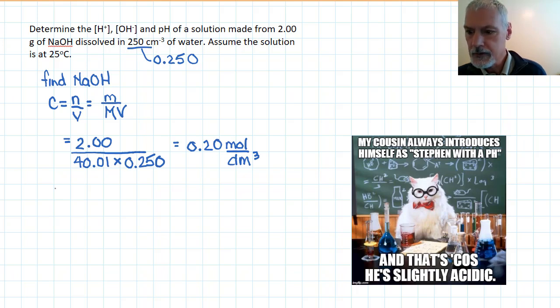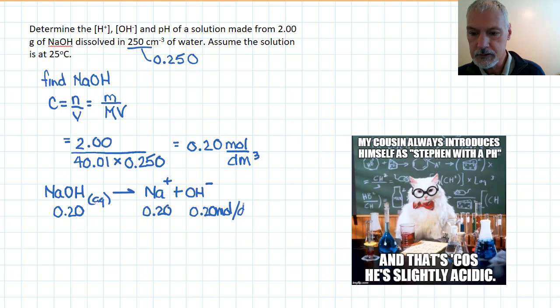Now when sodium hydroxide dissolves, let's take a look at it. NaOH, when we put that into water, it breaks apart into sodium ions and OH ions. So if the concentration or the amount of this substance as I view it is 0.20 of this, when it all dissolves, I'll have 0.20 of sodium and 0.20 moles per decimeter cubed of the hydroxide ion.